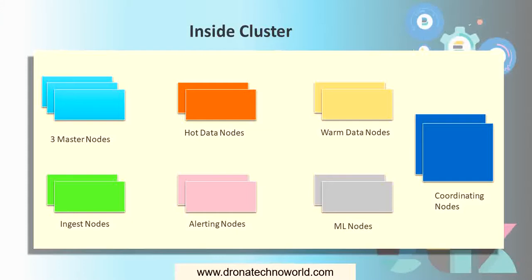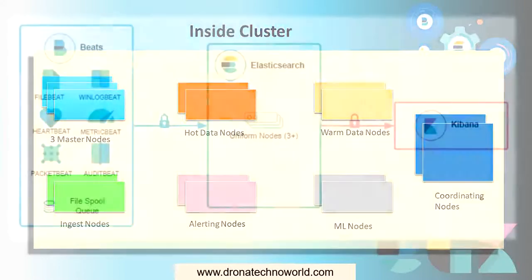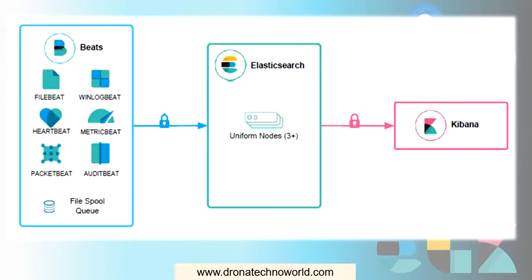Now let's understand the architecture — how these components are arranged and how we can leverage all these components for achieving better search functionality in your application. The basic architecture looks like this: Beats on the left-hand side will act as an input provider. You can use Filebeat, Winlogbeat, Heartbeat, Metricbeat, Packetbeat, or Auditbeat based on your operating system. This input data will be pushed to Elasticsearch, which has the different kinds of nodes we already saw.